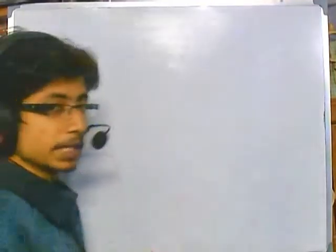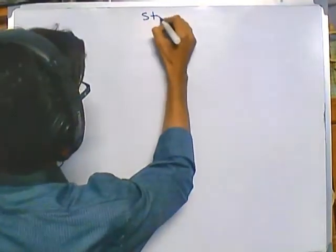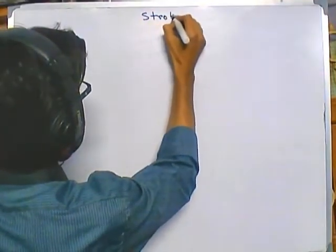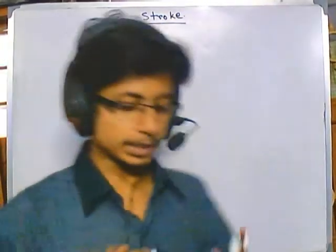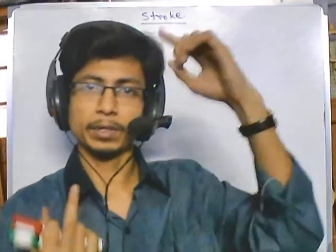In this video tutorial we will be talking about a serious medical concern which is called stroke. Now what is stroke? Stroke is a problem with our blood circulation system. It is linked with two important things: the blood circulation between our heart and our brain.